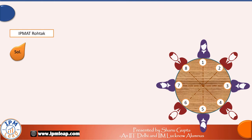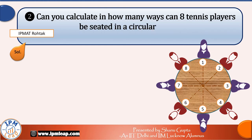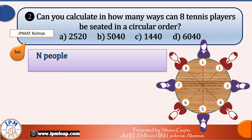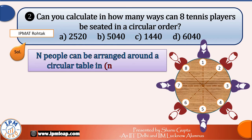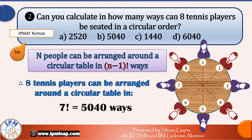Next question: in how many ways can 8 tennis players be seated in a circular order? We know that N people can be arranged around a circular table in (N−1)! ways. Therefore, 8 tennis players can be arranged in (8−1)! = 7! ways. 7! evaluates to 5040. Option B is the correct answer.